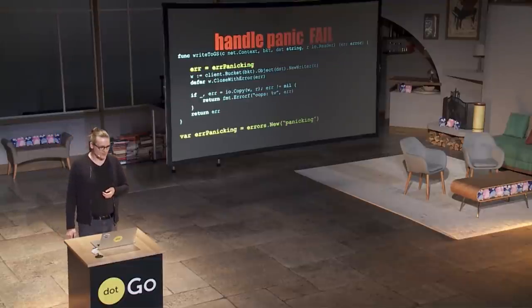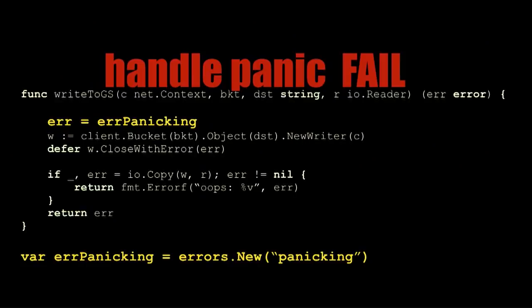Our first failure is that we should handle a panic. If there is a panic in copy, the error will be nil, it will be passed to close with error, and you have a partially written or corrupted file possibly being committed. We don't want that. The solution is simple — shown here in yellow. We basically set it to some arbitrary value and make sure that nil is only passed if there's actually success.